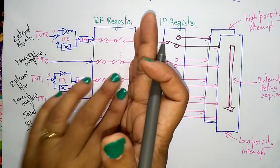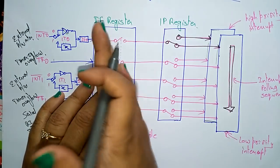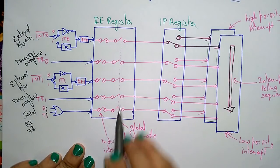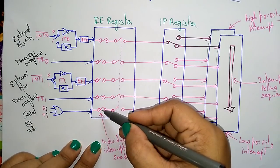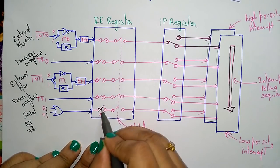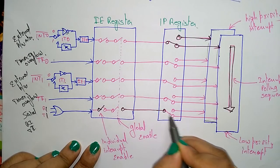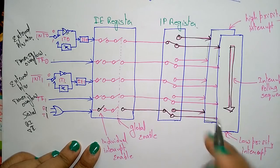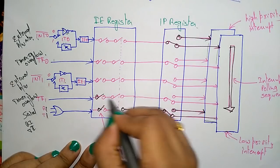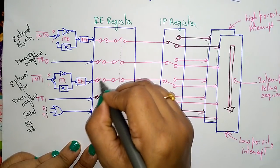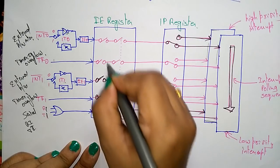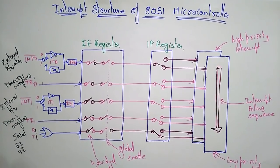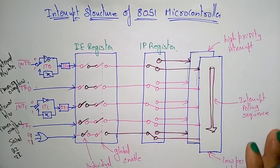These interrupts are stored in the interrupt enable register, which decides which interrupt has to be sent. They are placed in the interrupt priority register. This indicates the global enable, and this is the individual interrupt enable. Whenever an interrupt is enabled, it is sent to the interrupt priority register — low priority sends here, high priority sends here. Whenever it is high, the interrupt is enabled; whenever it is low, the interrupt is disabled. This is the internal interrupt structure of the 8051 microcontroller.